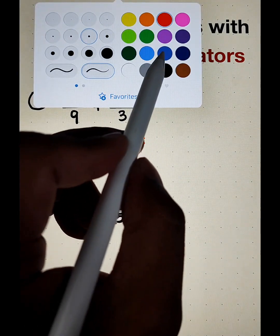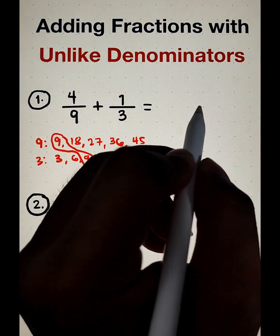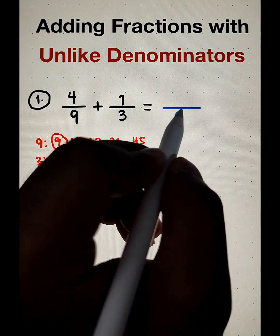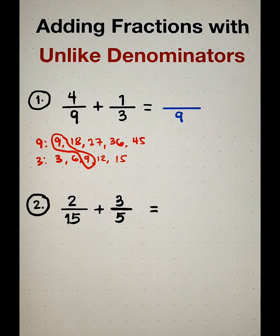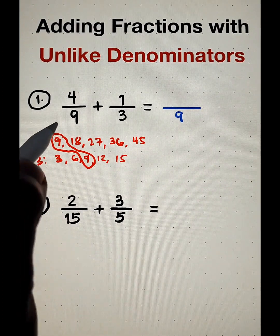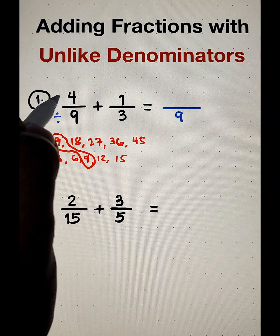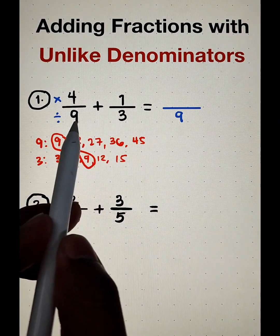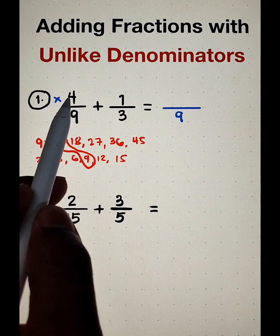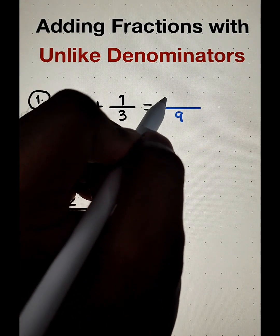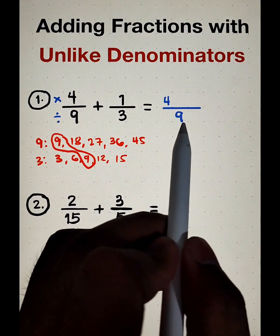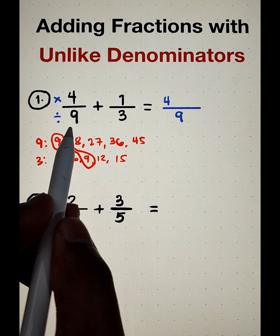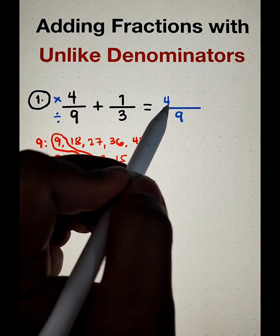So let us use a different ink. So we have here the LCD, which is 9. And what will happen here, listen to this, the process is you need to divide and multiply. So let's start. 9 divided by 9 is 1 times 4. That is equal to 4. Again, let me repeat myself. 9 divided by 9 is equal to 1 times 4. That is equal to 4.